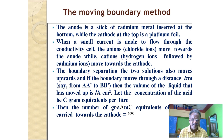The anode is a stick of cadmium metal inserted at the bottom, while the cathode at the top is platinum foil. It is very important: the anode is placed at the bottom and the cathode is placed at the top. When a small current is made to flow through the conductivity cell, the anions move towards the anode while cations move towards the cathode.